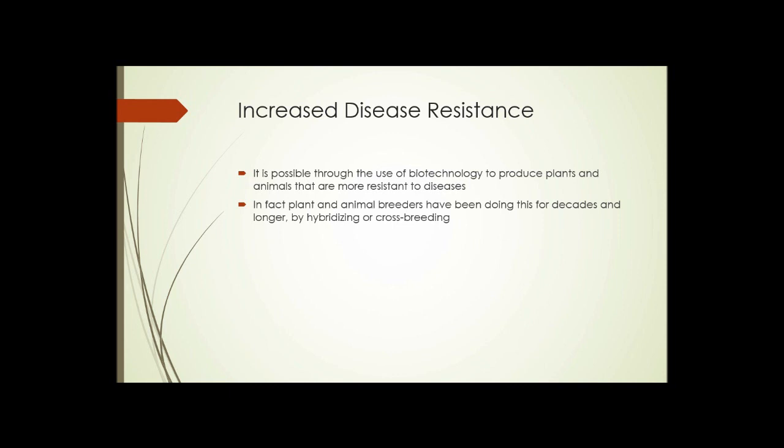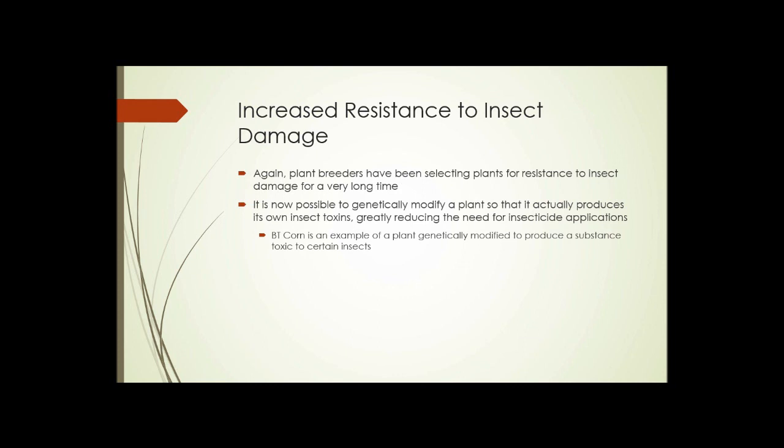Increased disease resistance: it's possible through the use of biotechnology to produce plants and animals that are more resistant to diseases. Plant and animal breeders have been doing this for decades and longer by hybridizing and crossbreeding. Increased resistance to insect damage: plant breeders have been selecting plants for increased resistance to insect damage for a very long time, but it's now possible to genetically modify a plant so that it actually produces its own insect toxins, greatly reducing the need for insecticide applications.